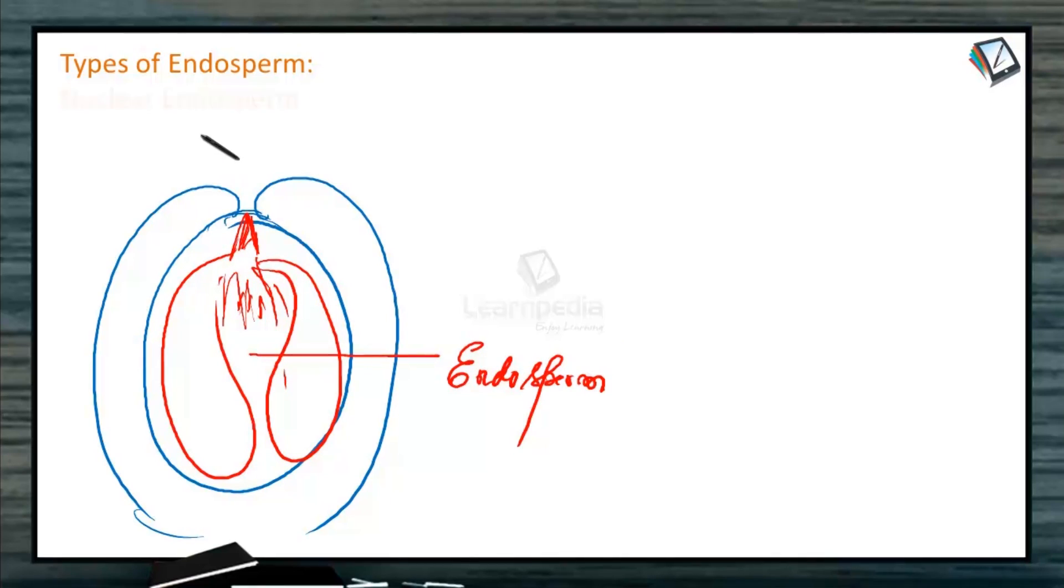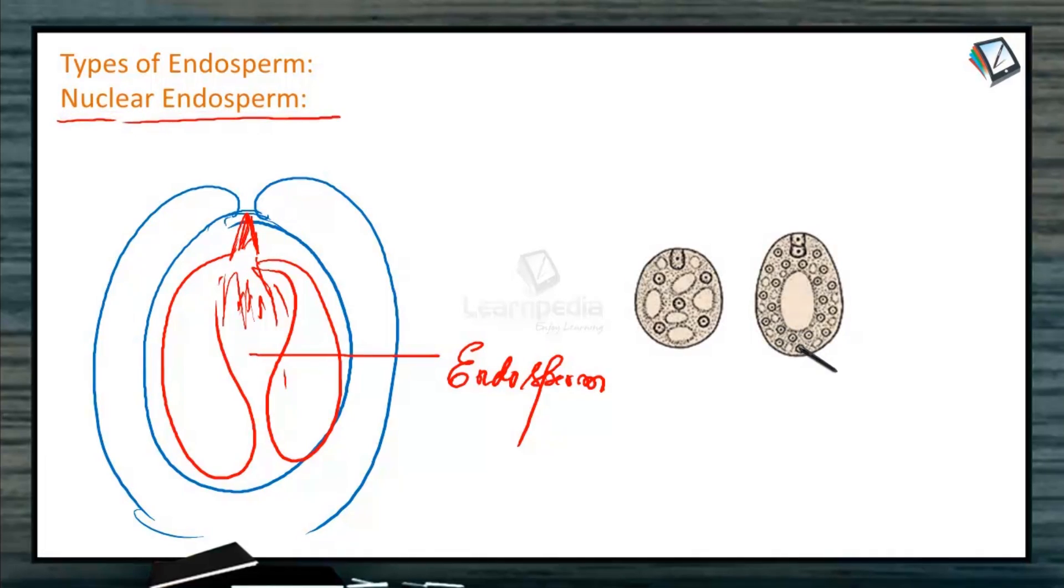One of the types is nuclear endosperm. Look at this image. Say this is the embryo sac and here is the zygote which develops into the embryo afterwards. Now the PEN, that is the primary endosperm nucleus, triploid nucleus divides.